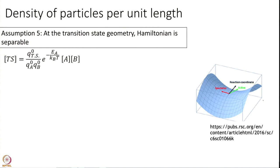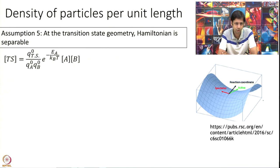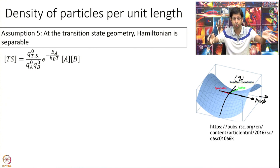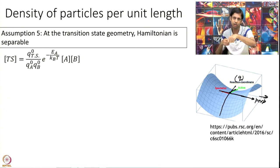Now we make our final assumption of the theory: at the transition state geometry, the Hamiltonian is separable. We call the reaction coordinate Q and the coordinates perpendicular to it as perpendicular coordinates. For a system with 3N degrees of freedom, one coordinate is the reaction coordinate and 3N minus 1 are perpendicular coordinates. The assumption is that the Hamiltonian at the transition state equals the Hamiltonian along Q plus the Hamiltonian along all perpendicular coordinates.